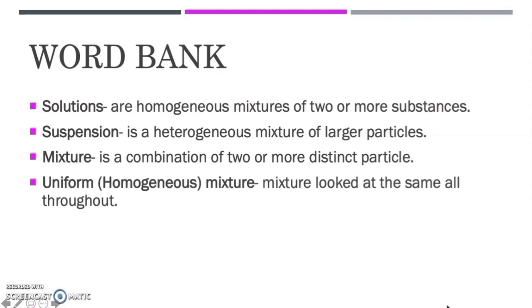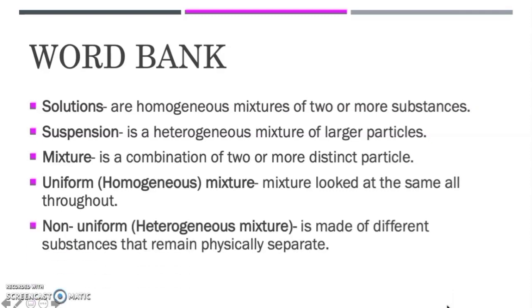We also have the word Uniform or Homogeneous Mixture — a mixture that looks the same all throughout. And we have Non-Uniform or Heterogeneous Mixture. It is made of different substances that remain physically separate.